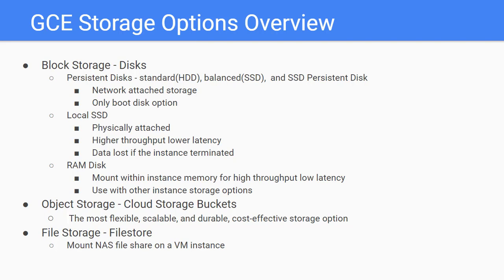Disk options have persistent disk, local SSD, and RAM. Persistent disks are durable network storage devices that your instances can access like physical disks in a desktop or server. The data on each persistent disk is distributed across several physical disks. When you configure a zonal or regional persistent disk, you can choose either standard persistent disk, balanced persistent disk, or SSD persistent disk. Standard persistent disk is backed by a standard hard disk drive; the other two options are backed by solid state drives.